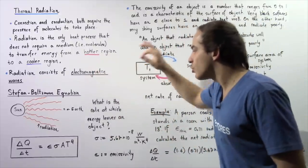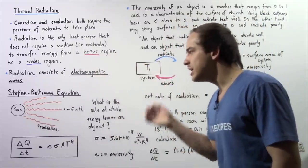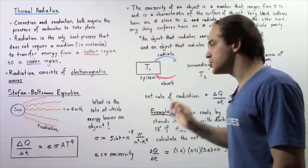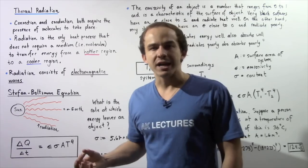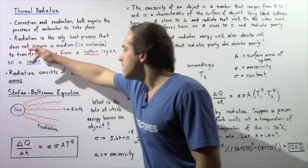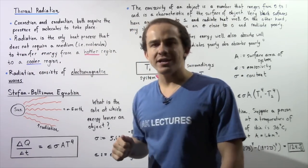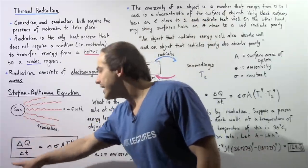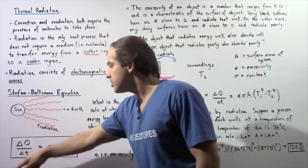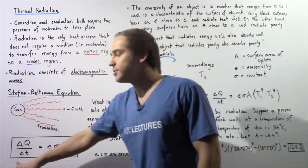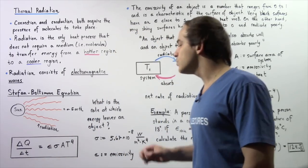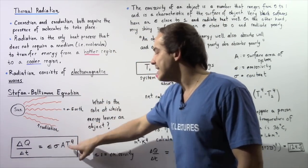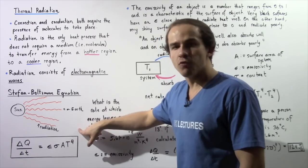What is the rate at which energy leaves any object? This is explained by the Stefan-Boltzmann equation. The rate of change of energy — change in energy divided by change in time — is equal to the product of epsilon (emissivity), sigma (the Stefan-Boltzmann constant), the surface area A of the object, and T to the fourth power, where T is the temperature of the object in Kelvin.